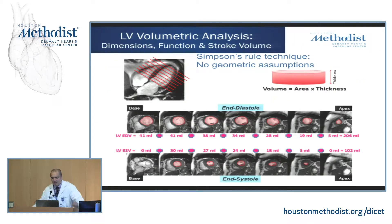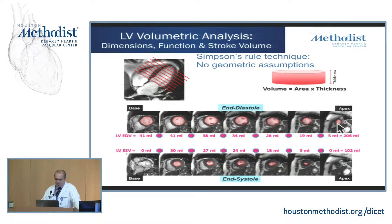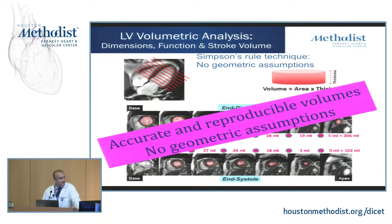How do we assess volumes and ejection fraction? One of the strengths of CMR is that it's a technique that doesn't really require geometric assumptions. We actually acquire sequential short axis slices from the base of the heart to the apex, typically every 8 to 10 millimeters apart with no gaps in between. The technologist or fellow will go through and contour the endocardium for systole as well as diastole for each individual slice. From that we get a reliable and reproducible measure of end-diastolic and end-systolic volume, stroke volume, and ejection fraction.